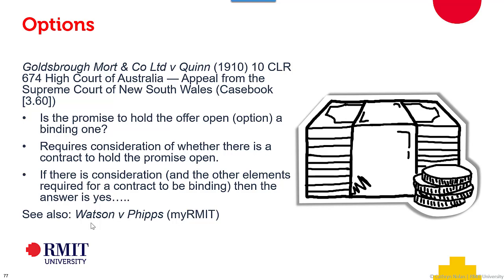An option is a situation where the offeror makes an offer but also puts a condition in place — if this condition is met, the offer can be left open. For example, if the offeror says 'I'm prepared to hold this open for you for 24 hours provided you pay me a hundred dollars,' that is an option. So an option is an enforceable promise — it is a particular type of contract.